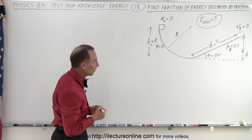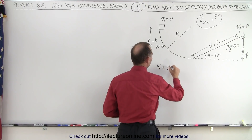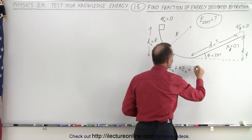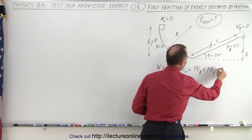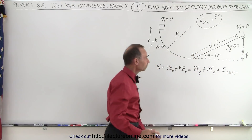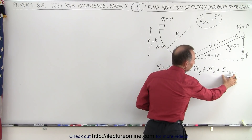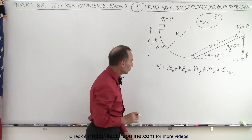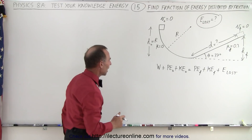We're going to use the energy conservation equation where we can say that the work put into the system plus the original potential energy plus the original kinetic energy must equal the final potential energy plus the final kinetic energy plus any energy lost due to friction. That's what we're looking for, and we need to find out what the fractional loss is relative to the original energy.